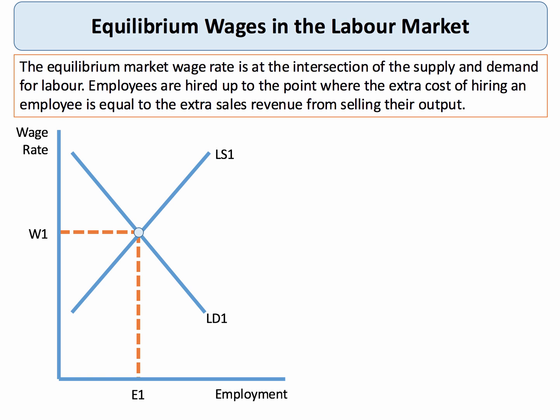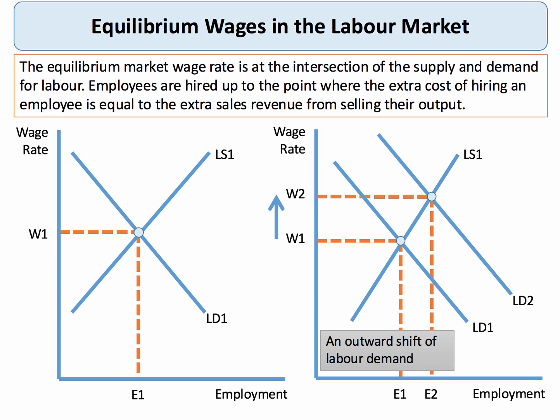Of course, changes in labour demand and labour supply will bring about changes in the equilibrium wage. In our first example, we see an outward shift in the demand for labour, with the labour supply curve fairly inelastic. This could be, for example, an increase in the demand for people working in the care sector. The increase in labour demand drives up the equilibrium wage from W1 to W2 and increases the equilibrium level of employment from E1 to E2. Strong labour demand often leads to higher wages in particular jobs.